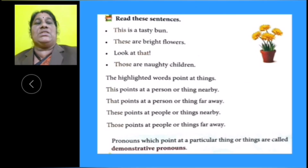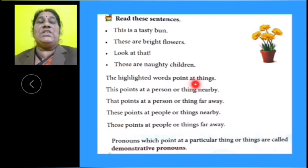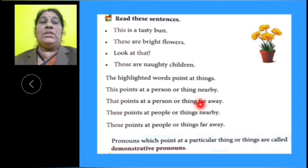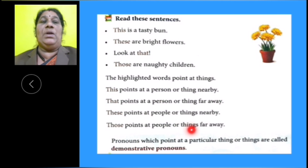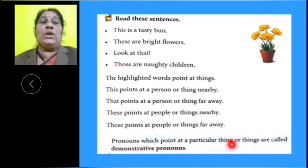Now, let us read the next sentences: 'This is a tasty bun. These are bright flowers. Look at that. Those are naughty children.' The highlighted words point at things. This points at a person or thing nearby. That points at a person or thing far away. These points at people or things nearby. Those points at people or things far away. Pronouns which point at a particular thing or things are called demonstrative pronouns.